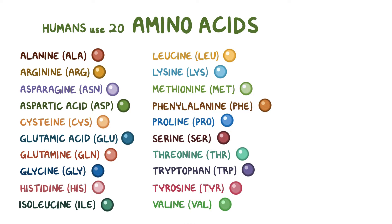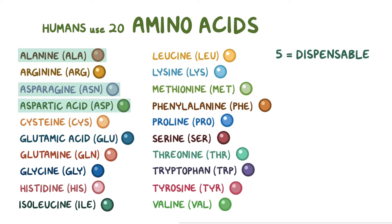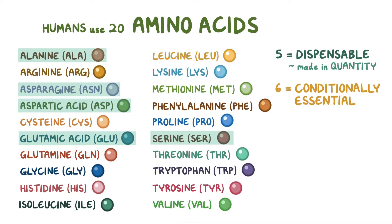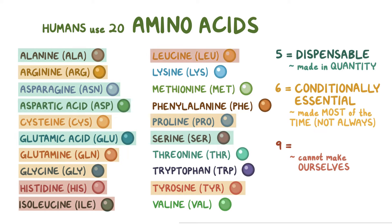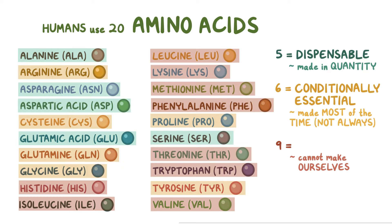One way to divide these is into the ones that we make ourselves and the ones that we cannot. There are five amino acids that are dispensable—alanine, asparagine, aspartic acid, glutamic acid, and serine—because we can make them de novo ourselves at any time, and in good quantity. Then there are six that we call conditionally essential, because we can make them most of the time but not always: arginine, cysteine, glutamine, glycine, proline, and tyrosine. Finally, there are nine that we cannot make ourselves—histidine, isoleucine, leucine, lysine, methionine, phenylalanine, threonine, tryptophan, and valine—and so we have to obtain them from our diet. We call these the essential amino acids.